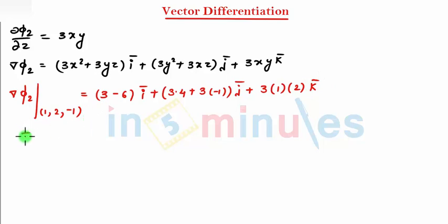So finally I can write ∇φ2 is equal to -3î, this will be 12 - 3 so that comes to -9ĵ, and 3 times 2 is 6k̂. So I got ∇φ2 and ∇φ1.